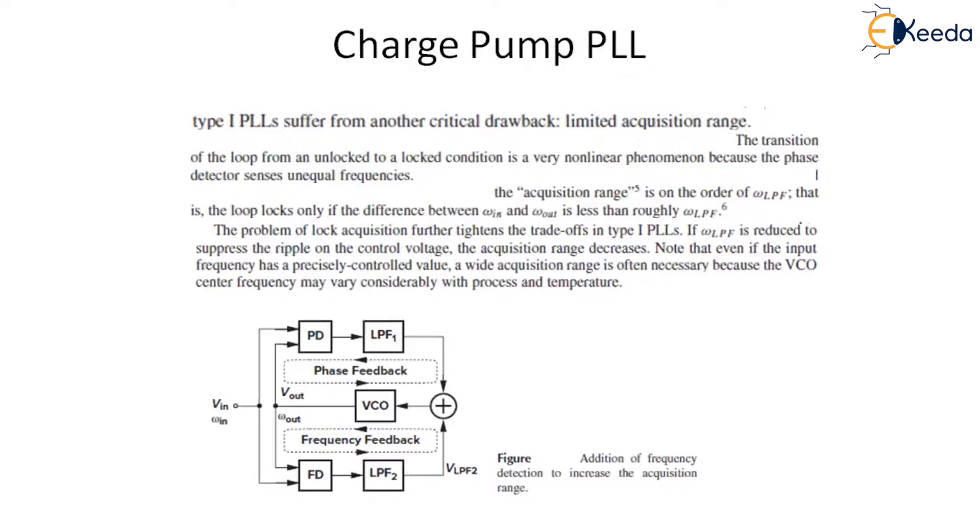Charge pump PLL. This type 1 PLL suffers from another critical drawback, that is, it has limited acquisition range. The transition of the loop from the unlocked condition to a locked condition is a very nonlinear phenomenon because the phase detector senses unequal frequency between its two inputs. Thus, the acquisition range is on the order of omega LPF. The loop locks only if the difference between W in and W out is less than W LPF, the difference between these two frequencies.